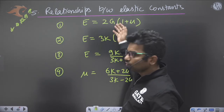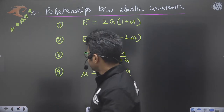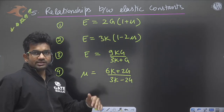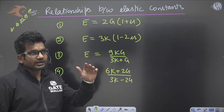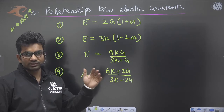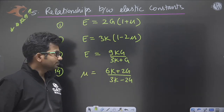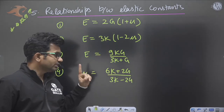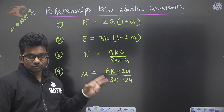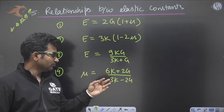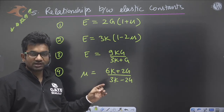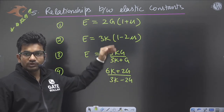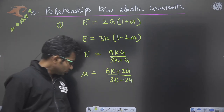Any two elastic constants being given allows us to find the remaining two. So the number of independent elastic constants for a linear isotropic homogeneous material is 2, even though the total number of elastic constants is four — E, G, K, and μ. Using these relationships, if any two are known, the other two can be easily calculated.